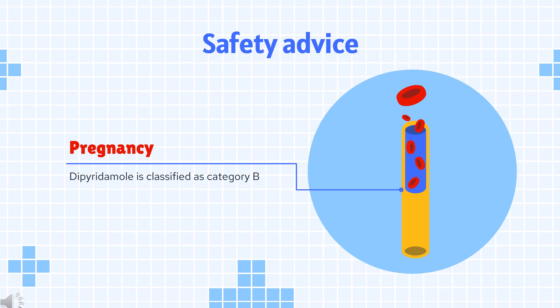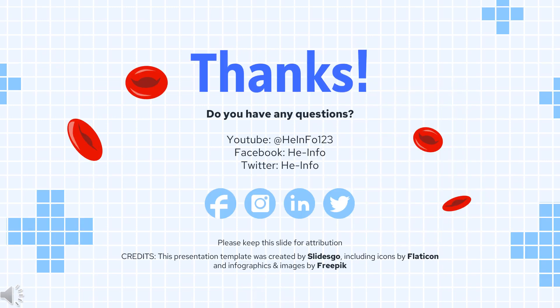Safety Advice. Pregnancy Category B. Because animal reproduction studies are not always predictive of human response, dipyridamol tablets should be used during pregnancy only if clearly needed.